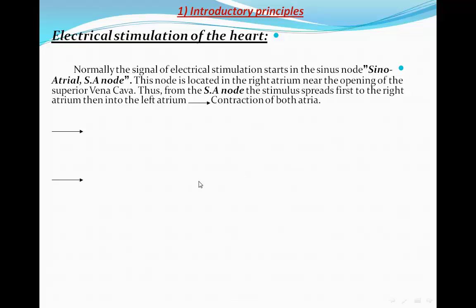Normally, the signal of the electrical stimulation starts at the sinus node, which is the SA node. This node is located in the right atrium near the opening of the SVC. From the SA node, the stimulus spreads first to the right atrium and then to the left atrium. This happens within milliseconds and is followed by contraction of both atria.